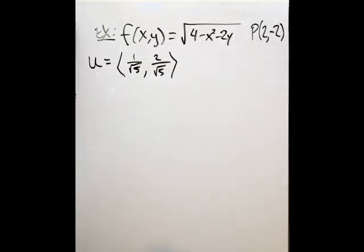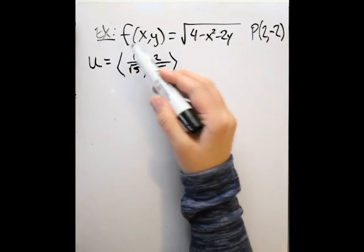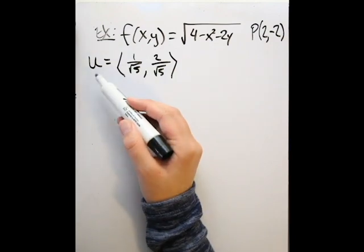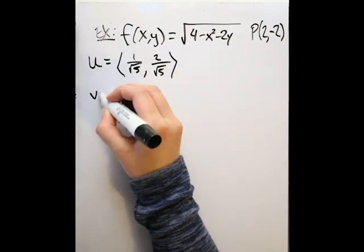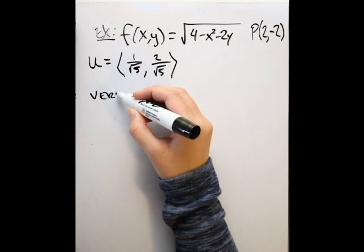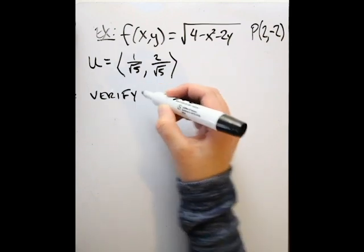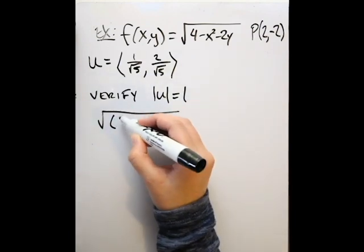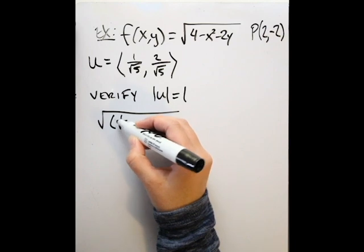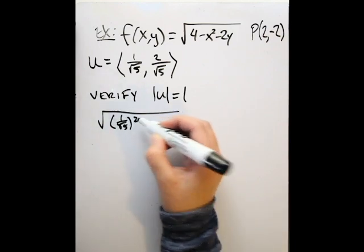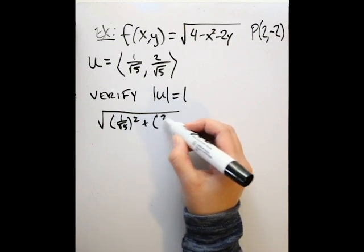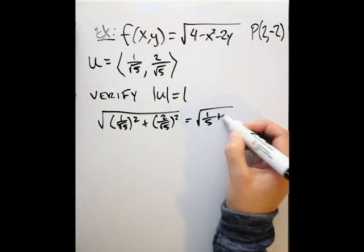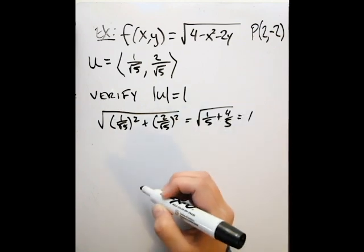We want to compute the directional derivative of F at the point (2, -2) in the direction of U. But first we need to verify that U is in fact a unit vector, so we verify that the magnitude of U is 1. We take the square root of (1/√5)² + (2/√5)², which gives us 1/5 + 4/5, so this is in fact 1. Now we can continue.